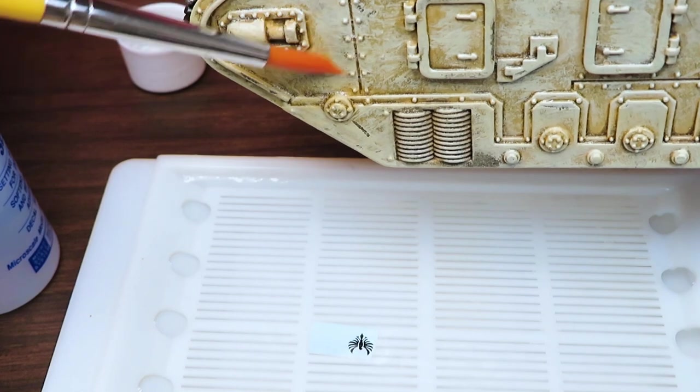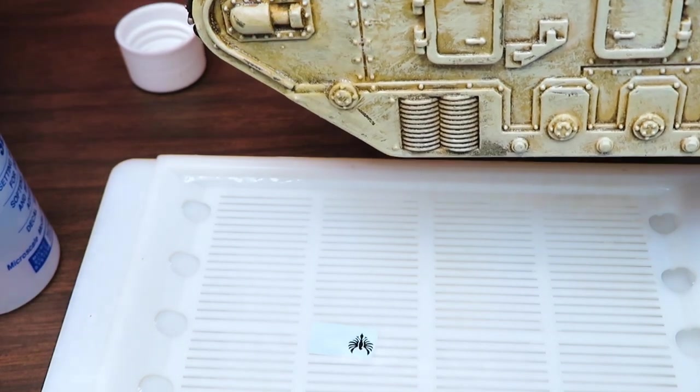And I'm just brushing over that area with the Microset. You can get a little sloppy with it. It evaporates off. By the smell of it, I think it's mostly vinegar.